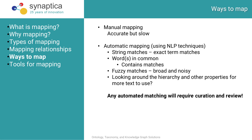Broadly speaking, there are two basic ways of accomplishing mapping between vocabularies. Manual mapping involves mapping by hand — someone goes through each vocabulary and finds equivalencies or other types of matches and asserts a link.